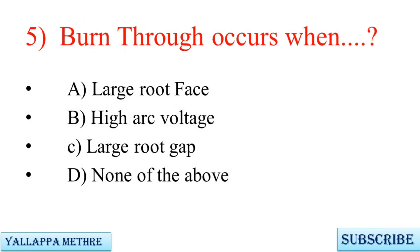Question 5: Burn through occurs when — A. Large root face, B. High arc voltage, C. Large root gap, D. None of the above.